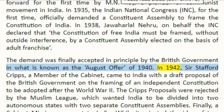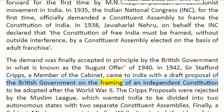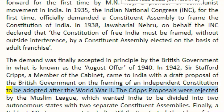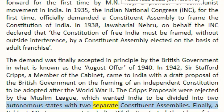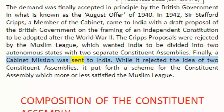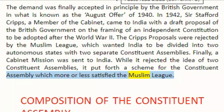In 1942, Sir Stafford Cripps, a member of the cabinet, came to India with a draft proposal of the British government on the framing of an independent constitution to be adopted after World War II. The Cripps' proposals were rejected by the Muslim League, which wanted India to be divided into two autonomous states with two separate constituent assemblies. Finally, a cabinet mission was sent to India. While it rejected the idea of two constituent assemblies, it put forth a scheme for the constituent assembly, which more or less satisfied the Muslim League.